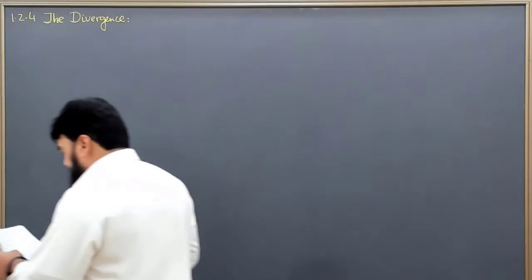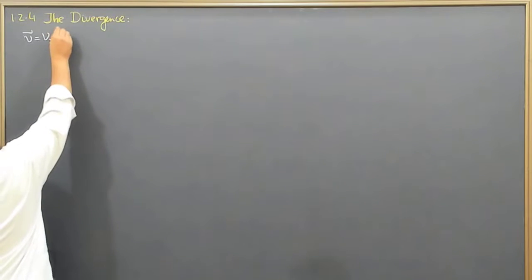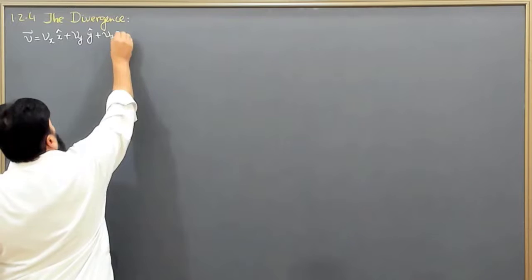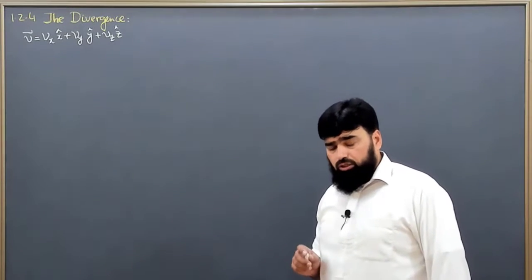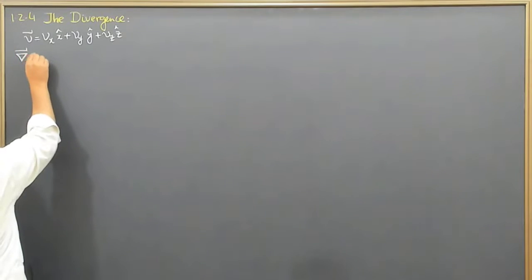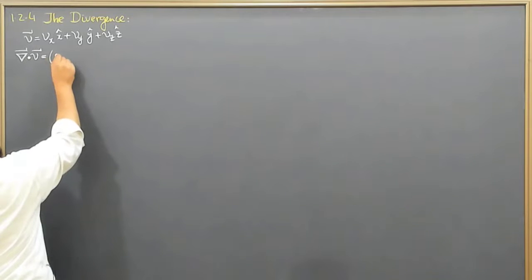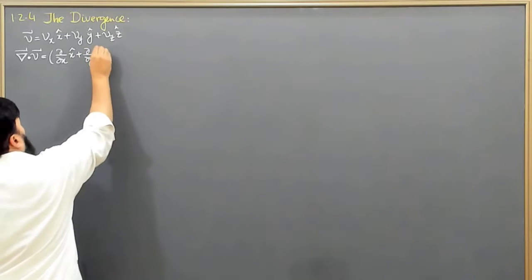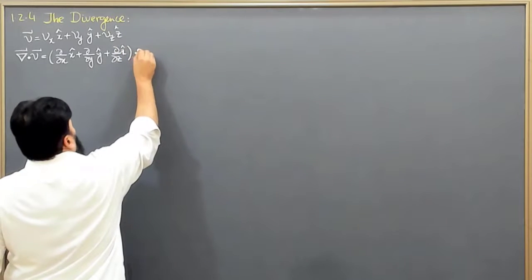Let's say we have a vector v, such that vector v equals v_x in the x unit vector, plus v_y in the y unit vector, and v_z in the z unit vector — a three-dimensional vector. We want to find the spread or divergence of this vector. The divergence of v is written as del-dot-v, where del is the operator curly/curly-x in x-hat plus curly/curly-y in y-hat plus curly/curly-z in z-hat, dotted with vector v.